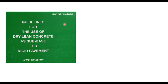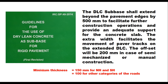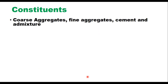IRC SP 49-2014 provides guidelines for use of dry lean concrete as sub-base in rigid pavements. It says that DLC sub-base should be extended beyond the pavement edges by 500 millimeters to facilitate further construction operations and provide adequate support for the concrete slab. This extra width also facilitates the movement of paver tracks on the extended DLC. This offset will be 200 millimeters in case of semi-mechanized or manual construction. Minimum thickness specified for national highway and state highway is 150 millimeters, and for other categories of road the thickness of DLC should be 100 millimeters.